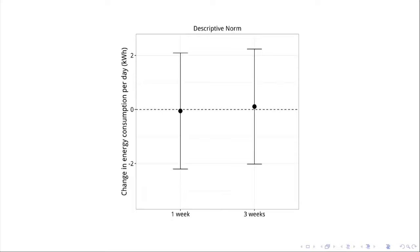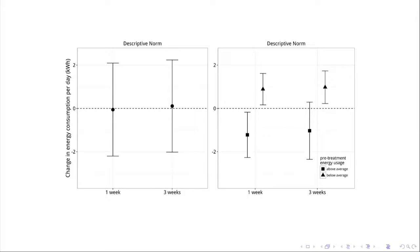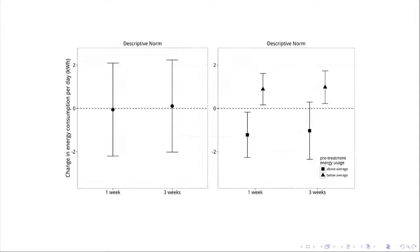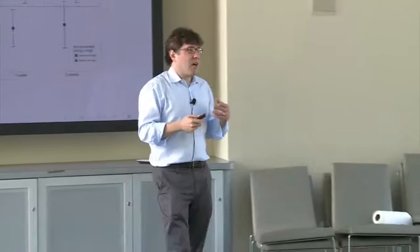They reasoned there might be differences based on how much electricity people were using ahead of time. When you split this out, people who were using less energy after getting the flyer actually started using more — thinking 'I should be using more.' But for people who were using more, it caused them to use less. So the treatment had the intended effect for some and exactly the opposite effect for others — whether measuring one week or three weeks after the treatment.